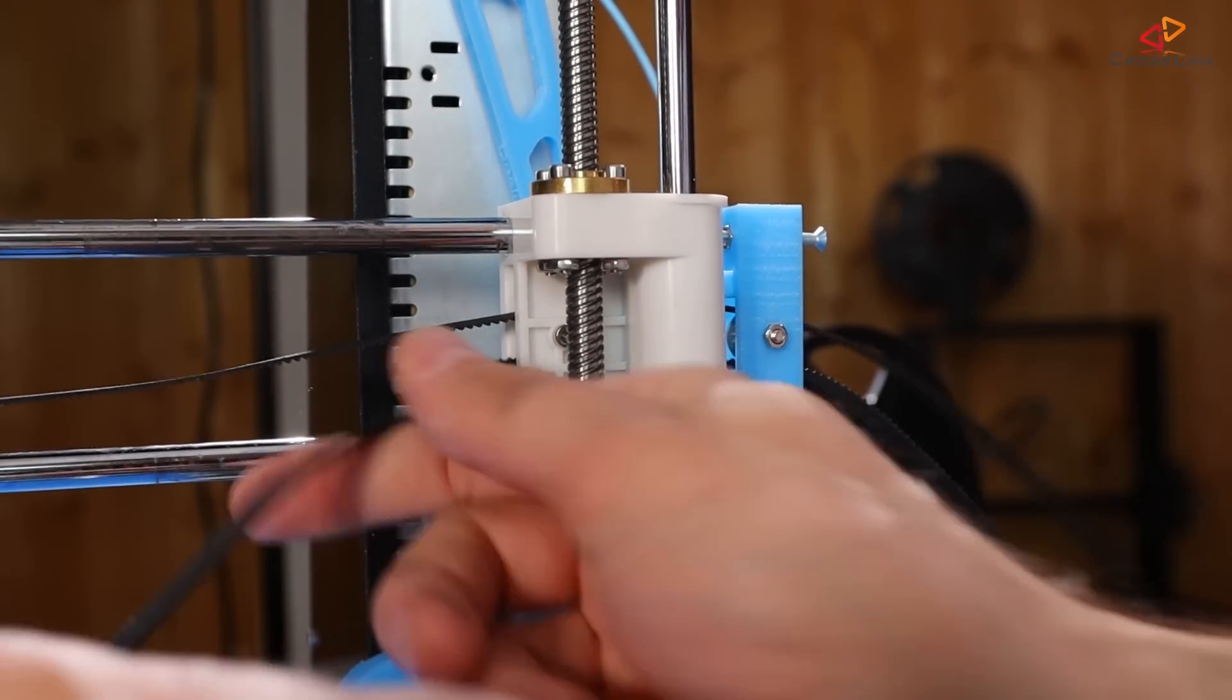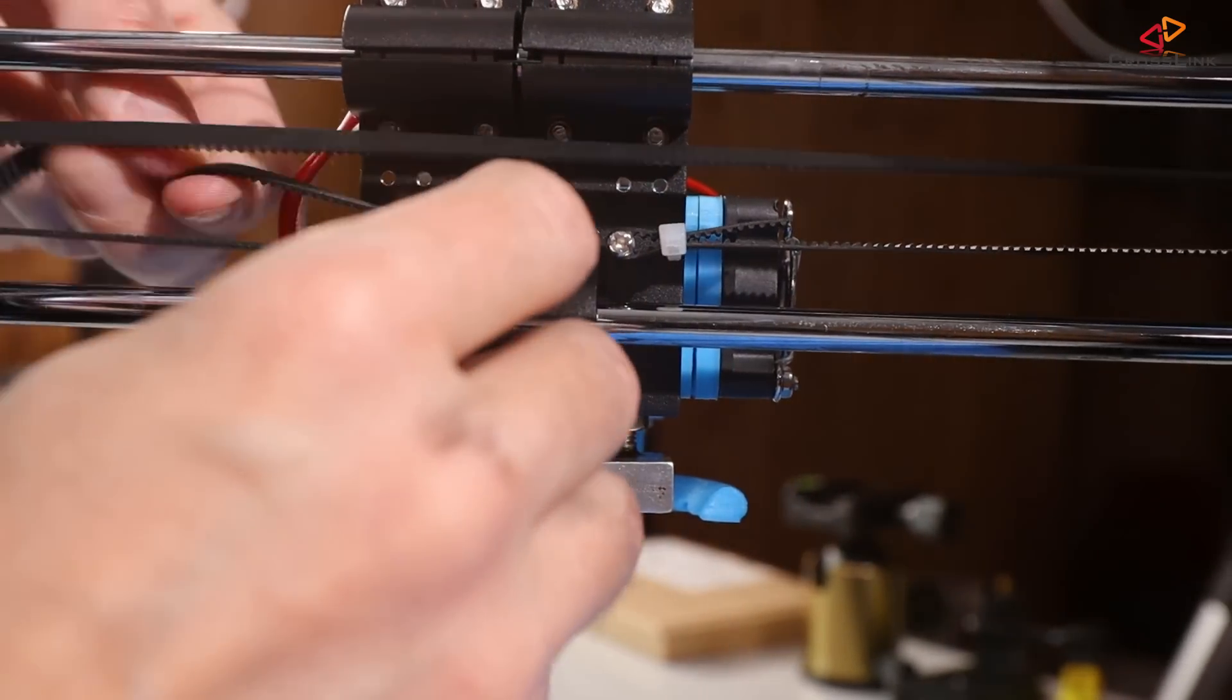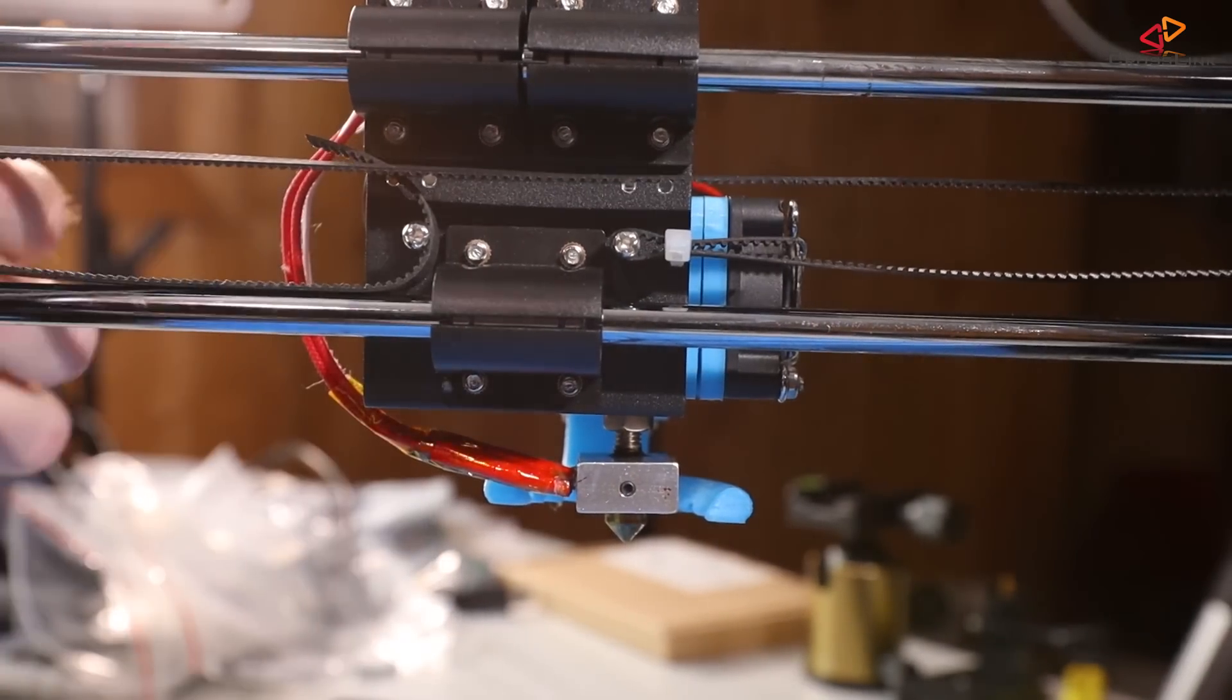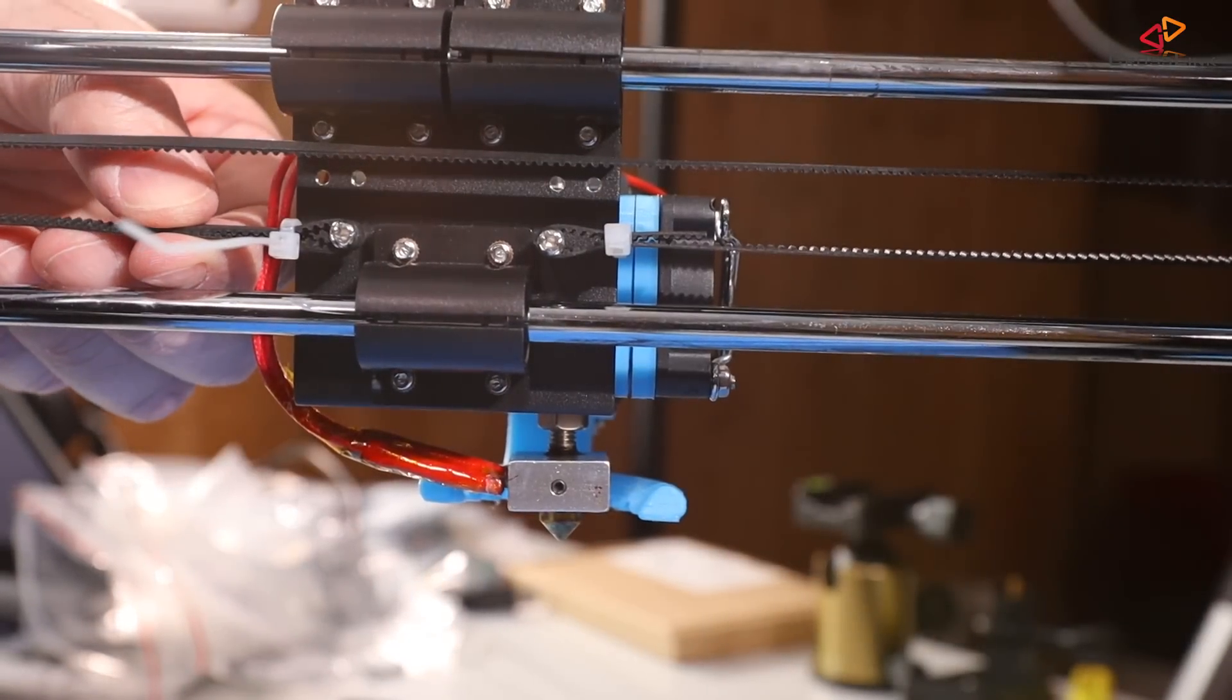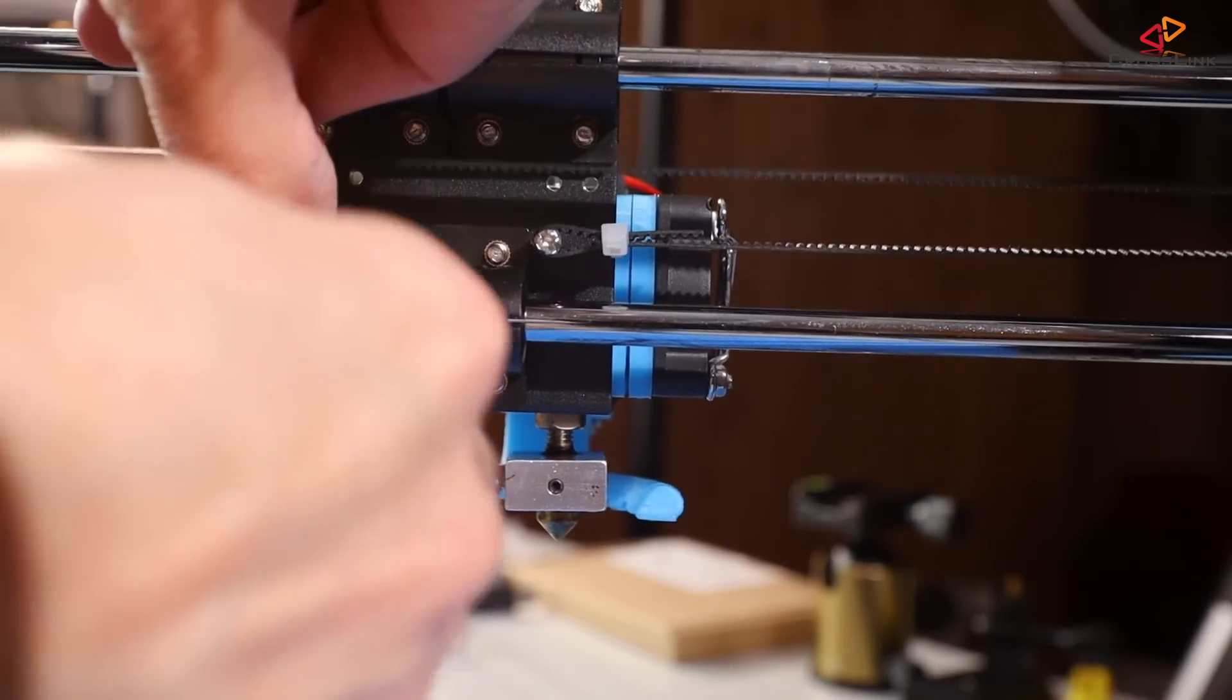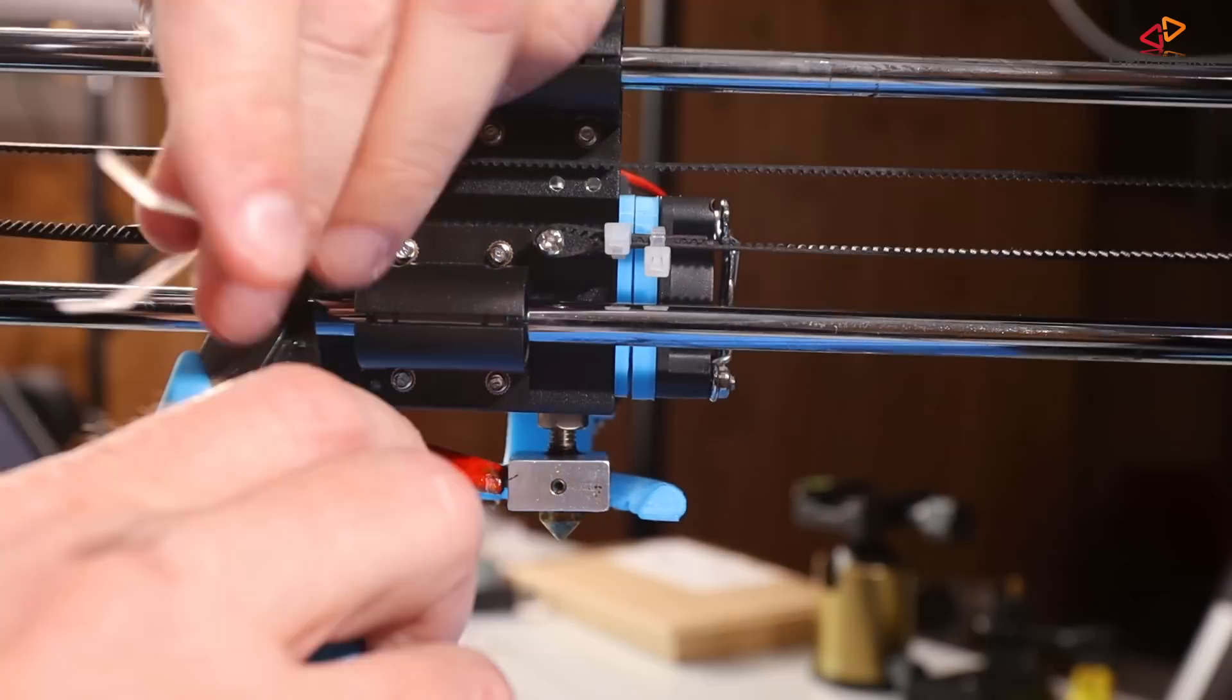Now take the belt, pull it straight and wrap it around the other belt attachment screw on the carriage so you can estimate where you need to cut it so you have some overlap left to fix it with a zip tie. The belt should already have some reasonable tension but it doesn't have to be really tight. Fix both belt attachments with a second zip tie just to make sure nothing moves anymore.